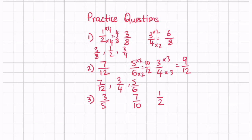For the final question, we have three fifths, seven tenths, and a half. Multiplying three fifths by two gives six over ten — wait, that gives nine over ten — seven tenths stays as seven over ten, and multiplying a half by five gives five over ten. Out of all these, five tenths is the smallest, which is a half, then seven tenths, and then nine tenths — but the original fraction is three fifths.